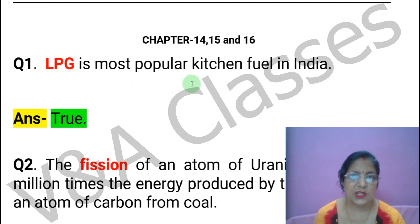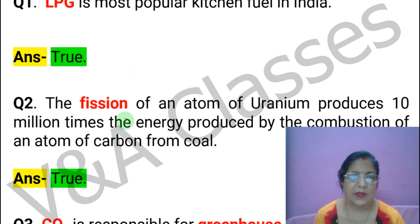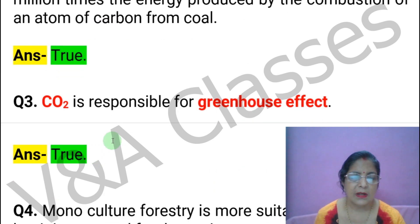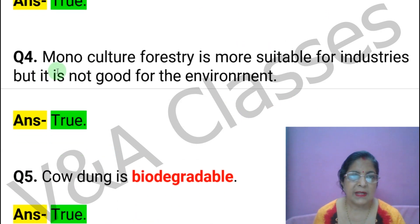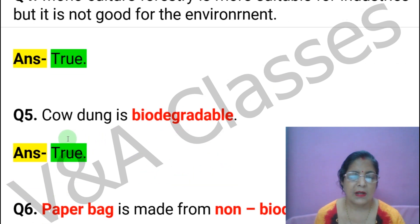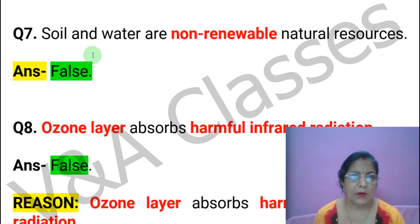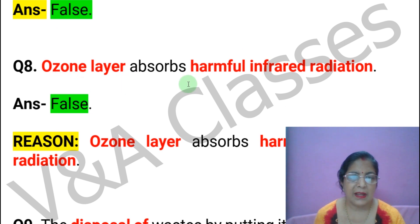Now Chapters 14, 15, and 16. First statement: LPG is the most popular kitchen fuel in India. This statement is TRUE. Next statement: The fission of one atom of uranium produces 10 million times the energy produced by the combustion of one atom of carbon from coal. This statement is TRUE. Next statement: Carbon dioxide is responsible for the greenhouse effect. This statement is TRUE. Next statement: Monoculture forestry is more suitable for industries but is not good for the environment. This statement is TRUE. Next statement: Cow dung is biodegradable. This statement is TRUE. Next statement: A paper bag is made from non-biodegradable material. This statement is FALSE. Next statement: Soil and water are non-renewable natural resources. This statement is FALSE.